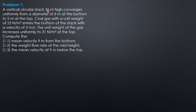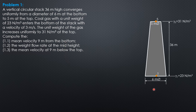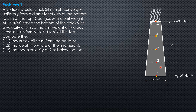Take note: 36 meters divided by 4 is 9 meters, so it's easy for us to answer this, especially the variation in diameter and the variation in specific weights. The diameter goes from 6 meters at the bottom to 5 meters at the top. We call the top as section 5 and the bottom as section 1, so that for every 9 meters there is a section. Section 3 is the mid-height.